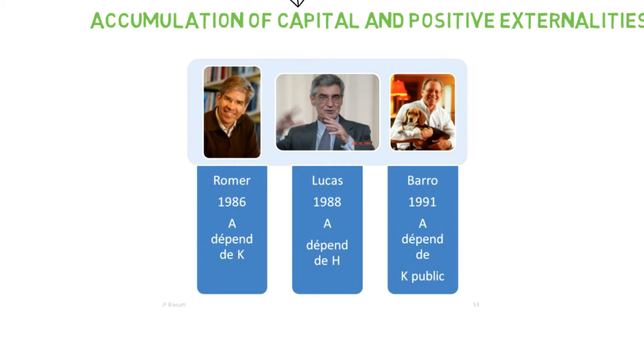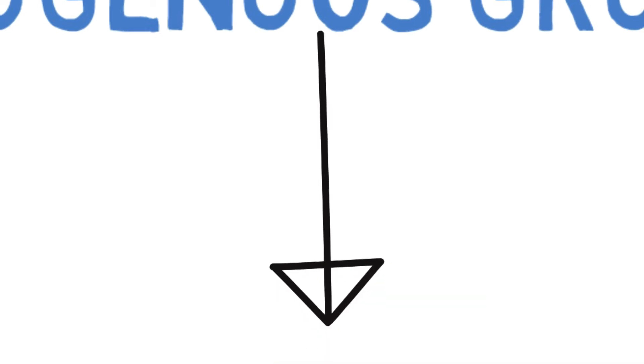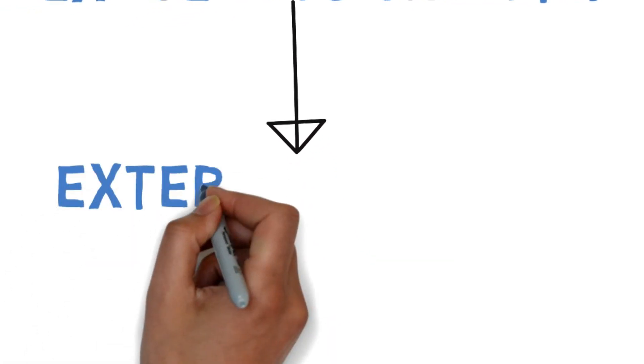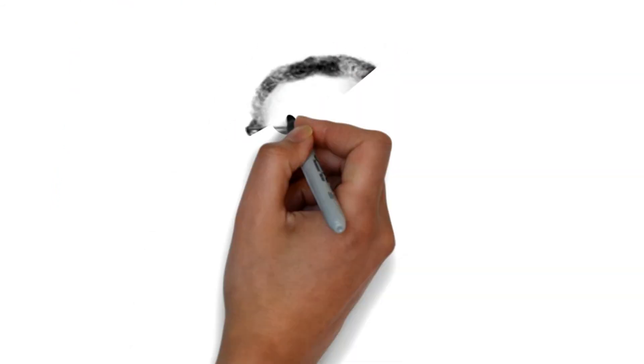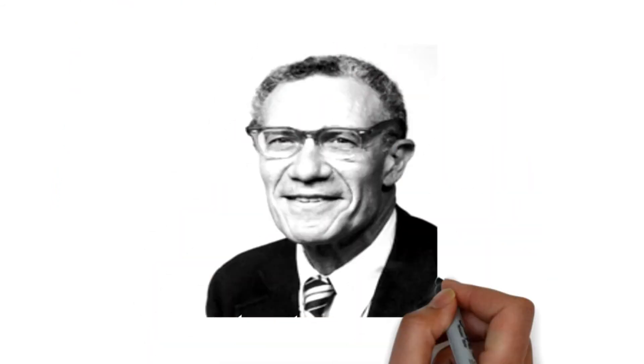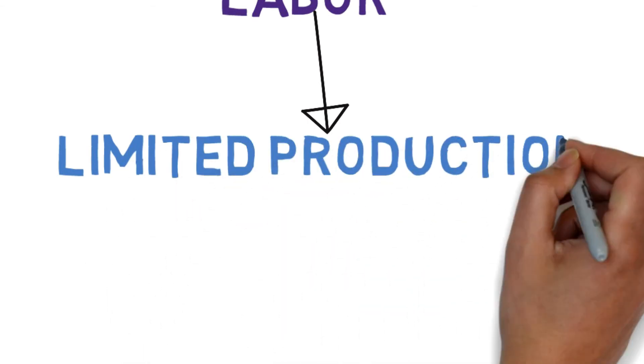Let's move on to Exogenous Growth. By its name, it's an external growth, and its founding father is the American economist Robert Solow, who explained that the two factors of production — namely capital and labor — may lead to poor productivity, or a limited production and a stationary state.